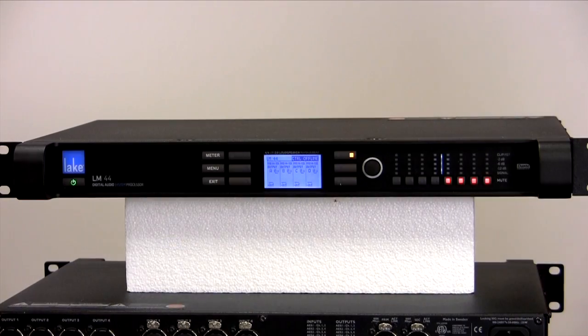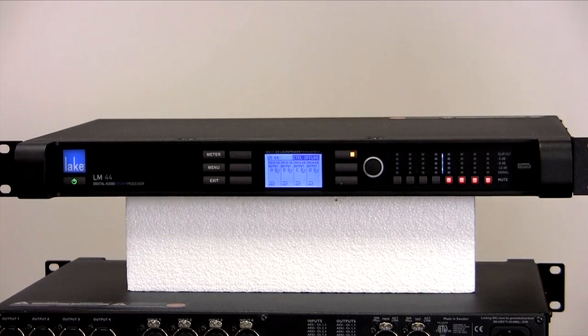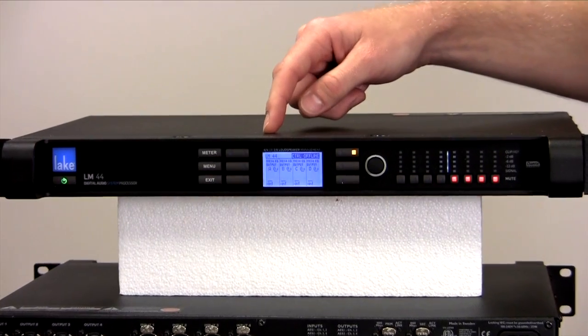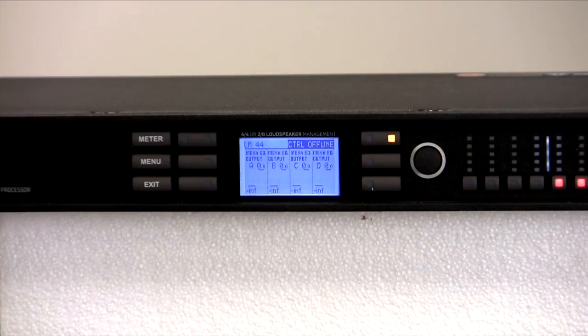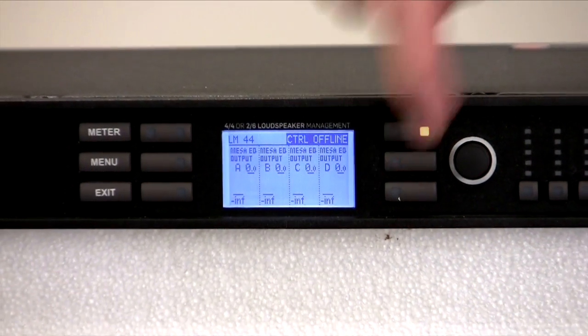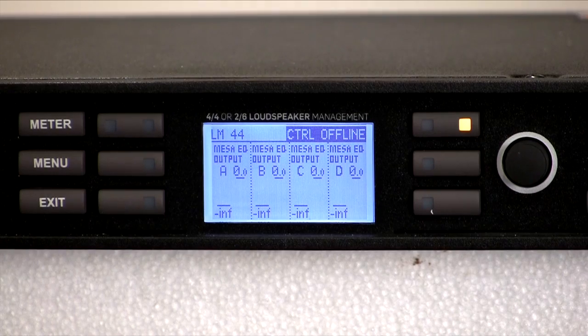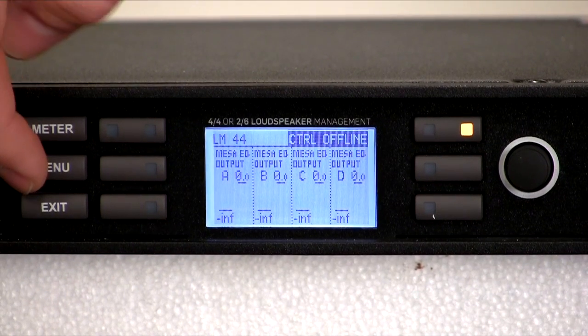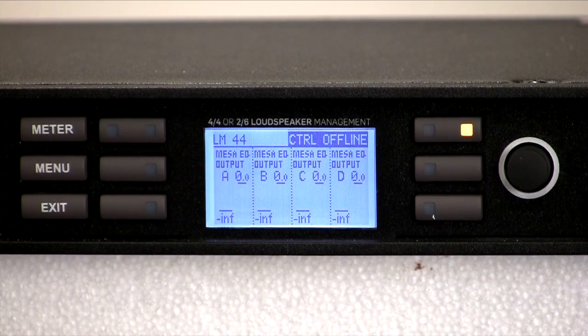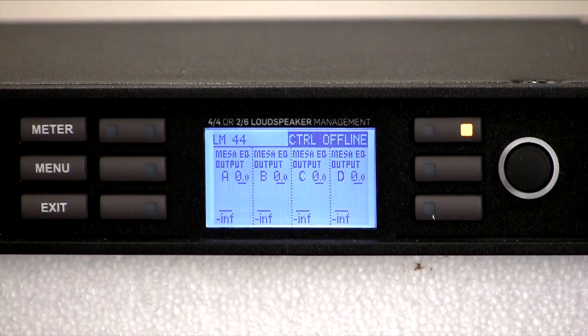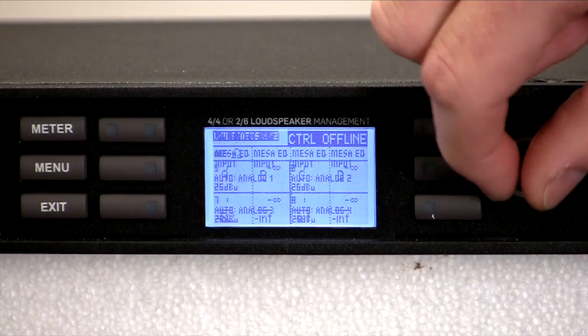This is the front panel of the LM44. In the center of the product we have the powerful user interface. It's based on a hybrid graphic display with six soft keys surrounding it. Through dedicated buttons you can access meter and menu mode. In menu mode you can browse through different frame and module parameters and do single and multiple parameter adjustments with a rotary encoder.